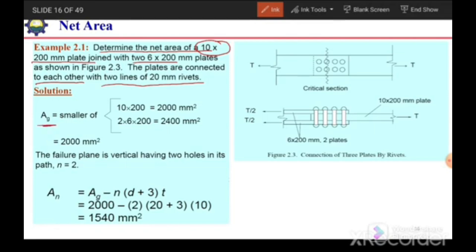If we calculate the area of these plates at this critical section, here we have two plates: one plate, this one, and the second plate is this. These are joined with the help of bolts in two rows. So at that section you will see we have one plate of 10 millimeter thickness and its width is 200 millimeters.